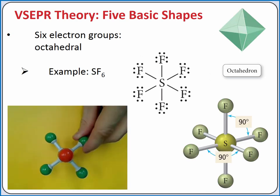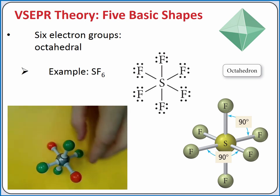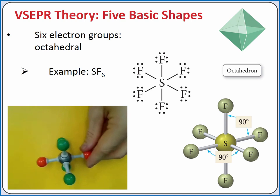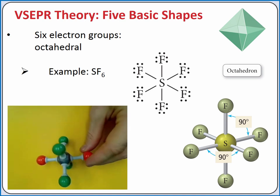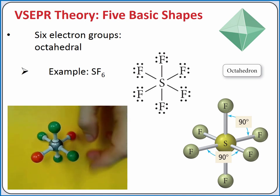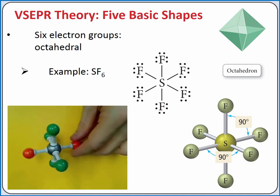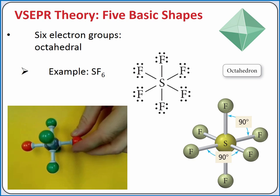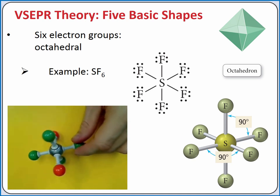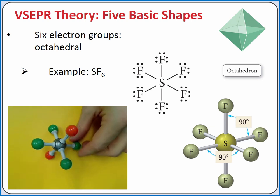If we add a sixth electron group to our central atom, the farthest we can put the six electron groups away from each other is to the corners of an octahedron. This geometry is called octahedral. The bond angle between any two groups in octahedral geometry is 90 degrees. Sulfur hexafluoride has an octahedral molecular geometry.